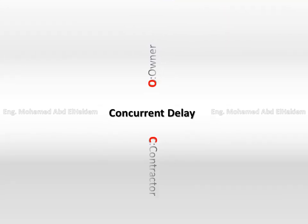Concurrency. Assuming that: 1. The criteria for concurrency have been satisfied. 2. There are the same two causes in each case: 1. Fault of the contractor. 2. The other fault of the employer or the architect.